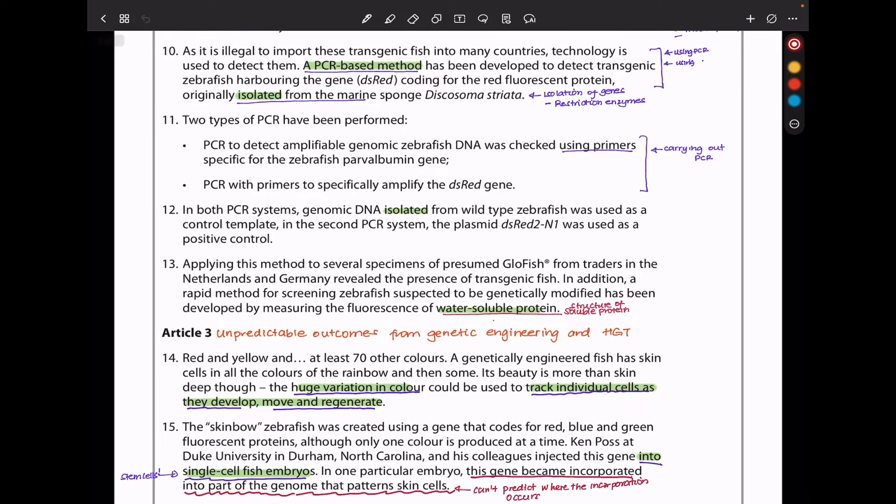In both PCR systems, genomic DNA isolated from wild-type zebrafish was used as a control template. In the second PCR system, the plasmid DsRed 2N1 was used as a positive control. Applying this method to several specimens of presumed glowfish from traders in the Netherlands and Germany revealed the presence of transgenic fish. In addition, a rapid method for screening zebrafish suspected to be genetically modified has been developed by measuring the fluorescence of water-soluble protein.